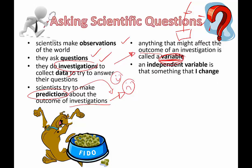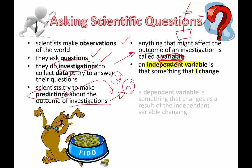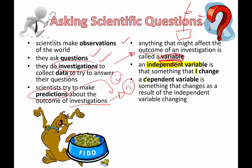An independent variable is something that I change — something that I am deliberately manipulating in an experiment. I want to see how this thing that I'm changing affects the outcome. The dependent variable is the thing that changes as a result of what I'm changing.